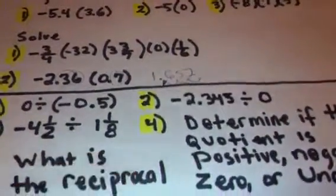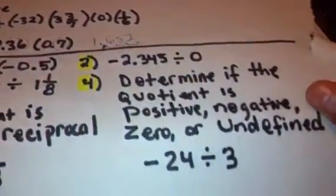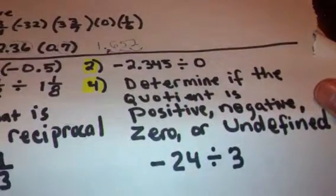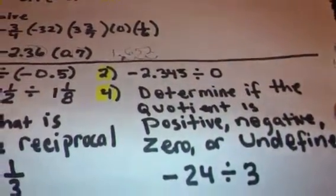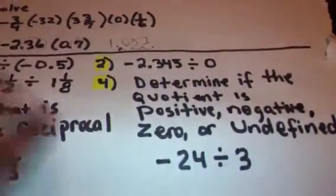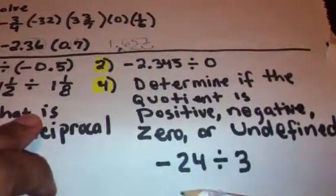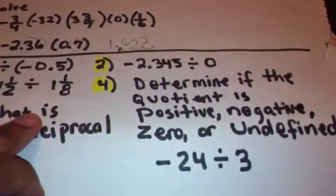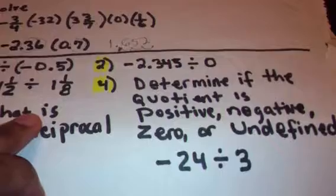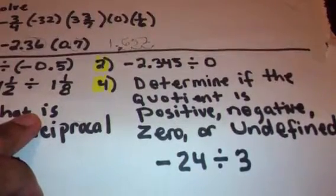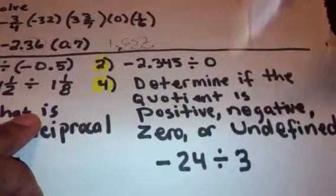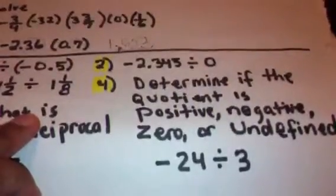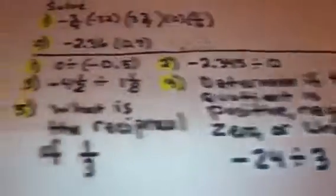Okay. Moving along to number 4 here with our division problems. It says, determine if the quotient is positive, negative, zero, or undefined. And we have a negative 24 divided by 3. So is the quotient going to be positive, negative, zero, or undefined? Well, it's division and we have unlike or different signs in front of our numbers. And so our quotient is going to be negative.